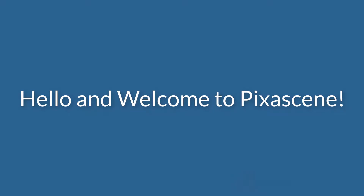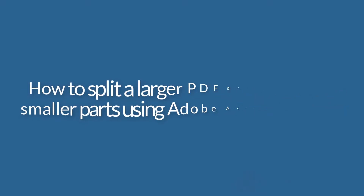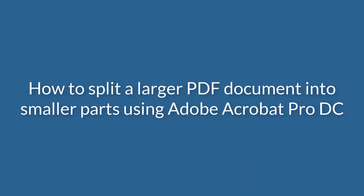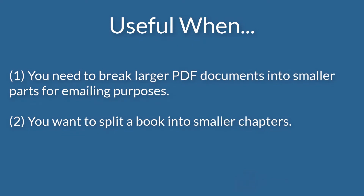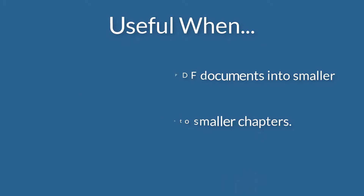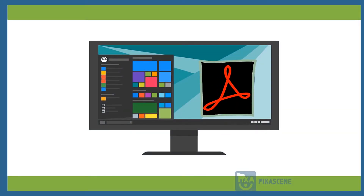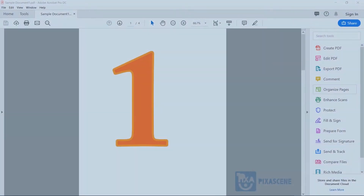Hello and welcome to Pixascene. In this video, I'm going to show you how to split a larger PDF document into smaller parts using Adobe Acrobat Pro DC. This skill is helpful when you cannot send a PDF document via email because it is too big, or when you want to break a long document, such as a book, into smaller parts. I am using a Windows version of Adobe Acrobat Pro, so the view and process might be different for those using the Mac version. Okay, let us get started.